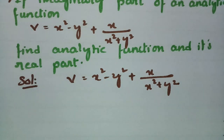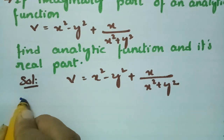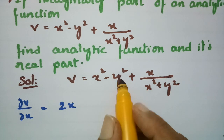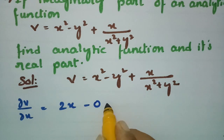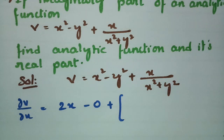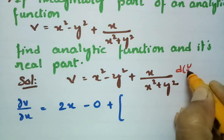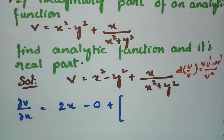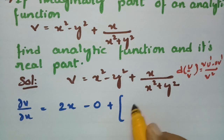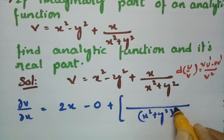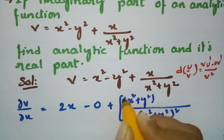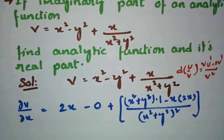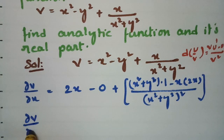First of all, I am going to differentiate with respect to x. So dou v by dou x: for x square it is 2x, and for y with respect to x it is 0. Here I have to apply the u-by-v quotient rule. Derivative of u by v is v squared times (v·u' minus u·v'). So using that formula, I am going to solve this.